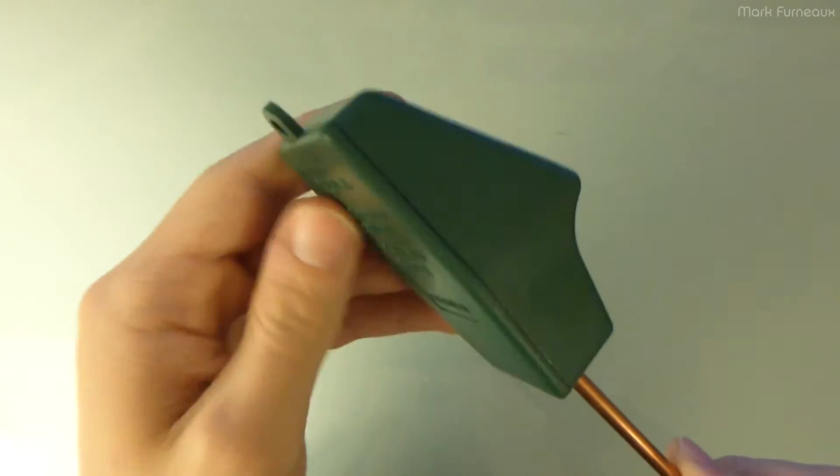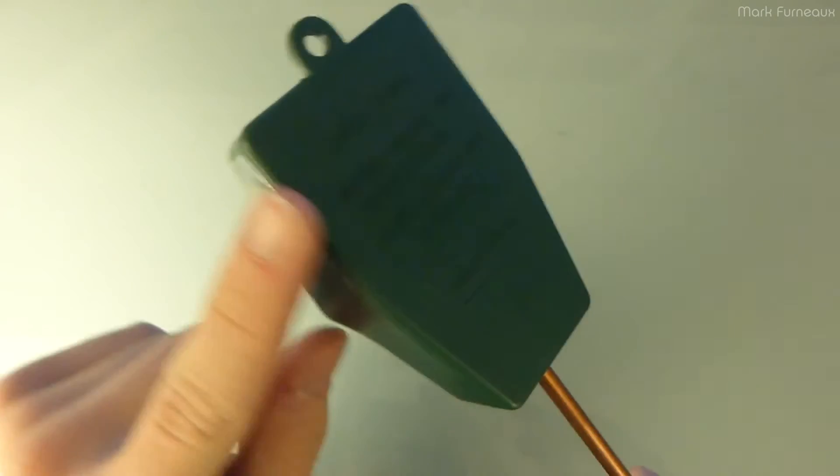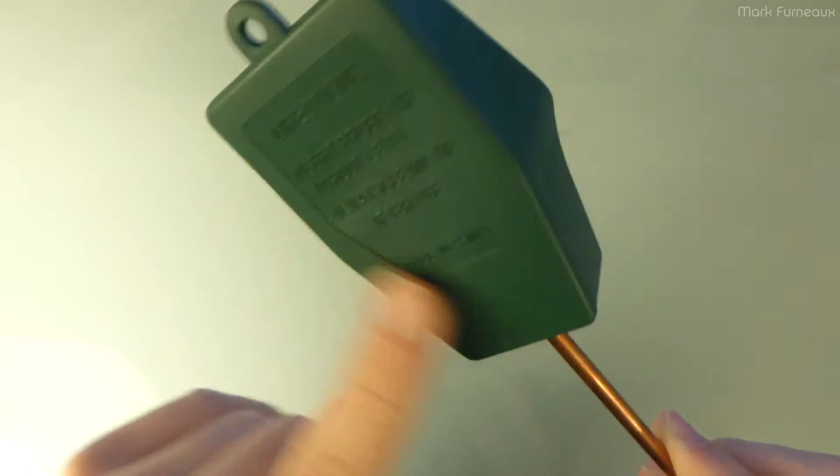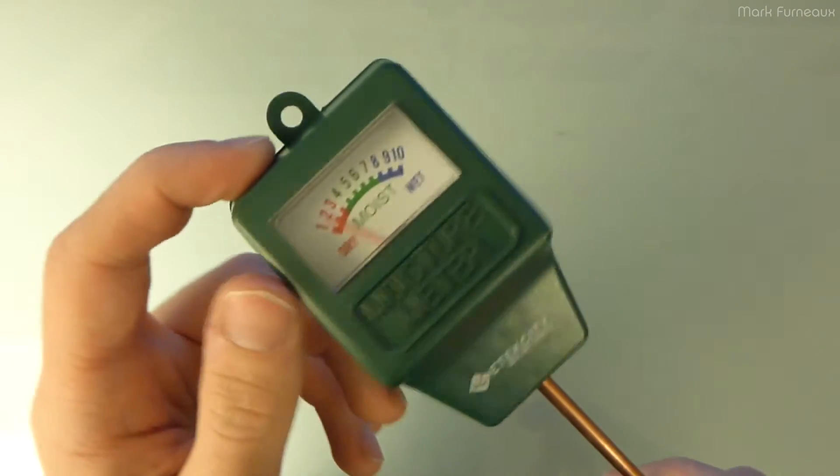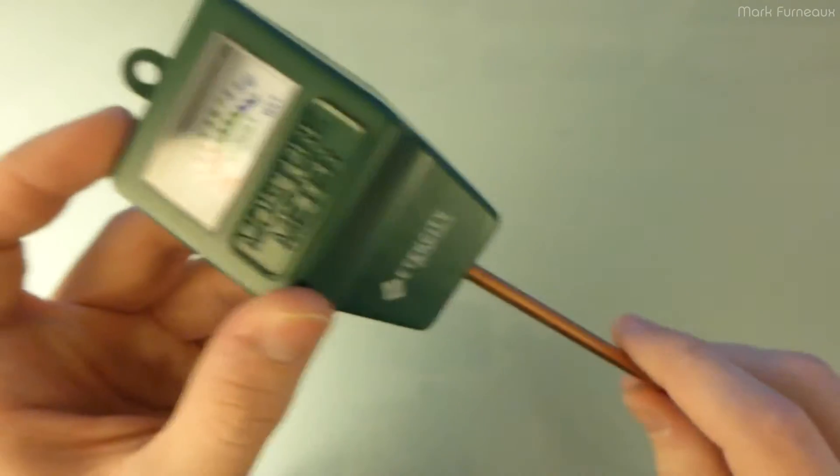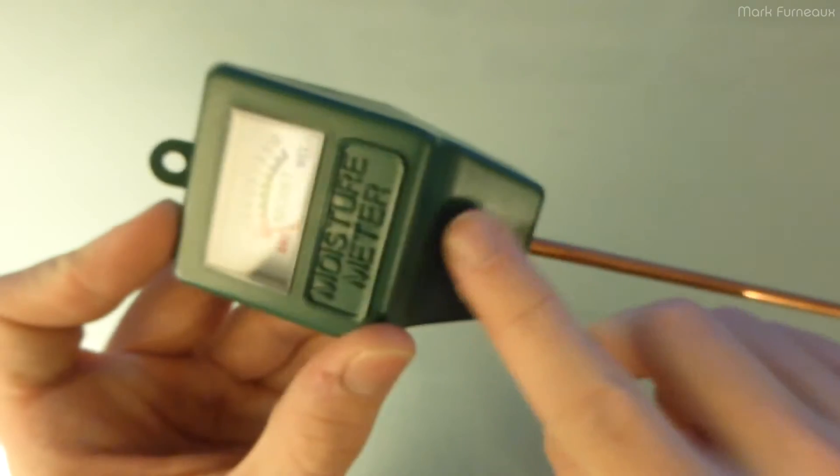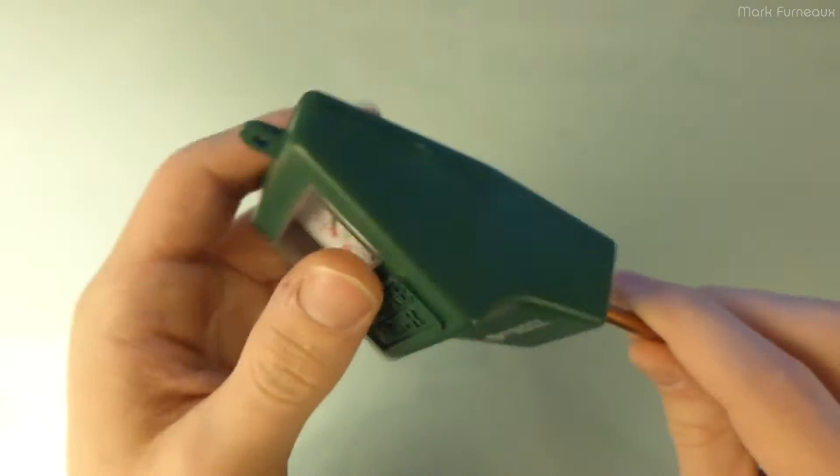I'm not going to try and do a teardown on this because there are no screws. I think it's probably glued together or ultrasonically welded or something, and there's nothing to see in this. I guarantee you there is literally two wires that come out of this and just go to the meter. That's probably all that's in it.